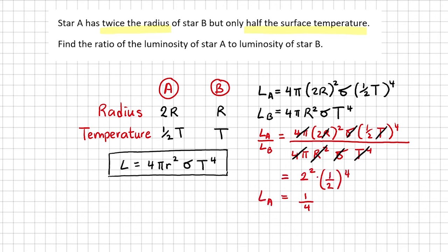This means that star A only has a quarter of star B's luminosity. Or you can think of star B being 4 times as luminous as star A. This further illustrates that the luminosity of a star is much more dependent on a star's temperature than the radius.